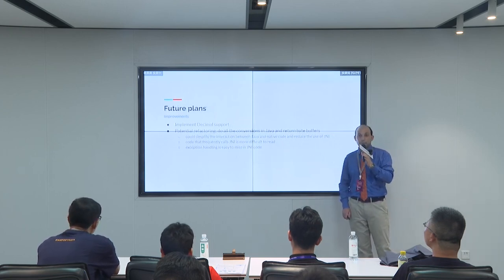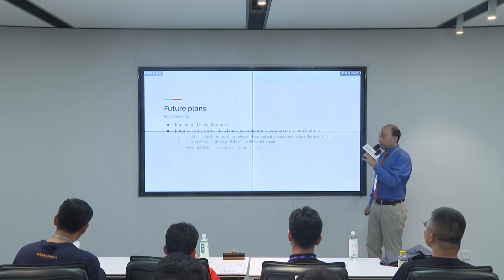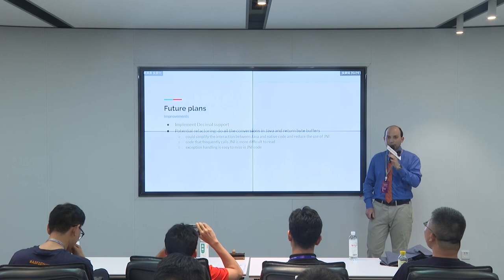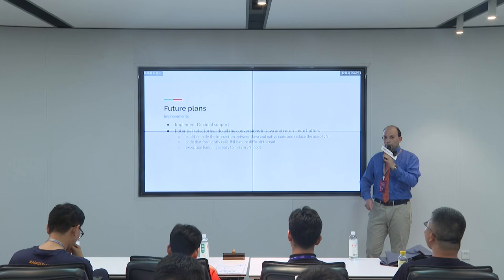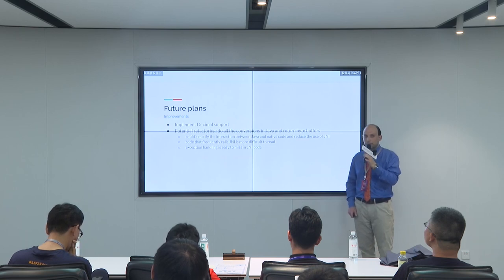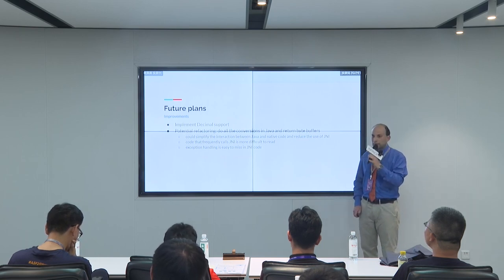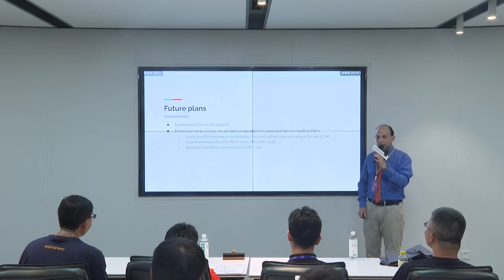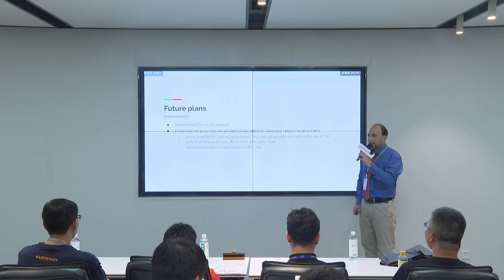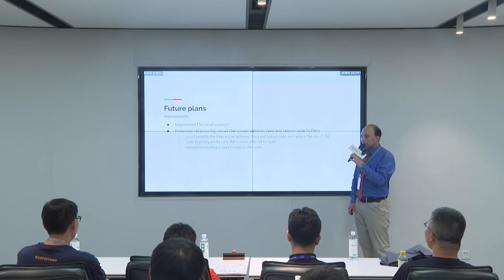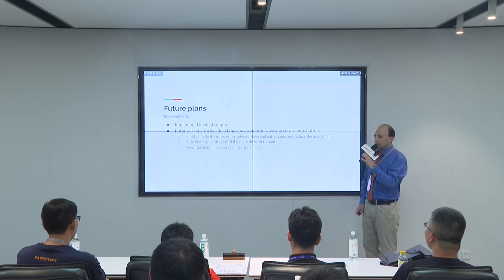This is where we are now, but we've also got plans for improvement — for example, obviously adding support for decimals. There's also an idea about refactoring the code so that instead of the present scheme, we could do all the conversions on the Java side and give back simple binary buffers. This could be beneficial because reading code with lots of JNI calls can be difficult, and especially Java exception handling from C++ code is very easy to get wrong. So it might be a better approach to minimize JNI.